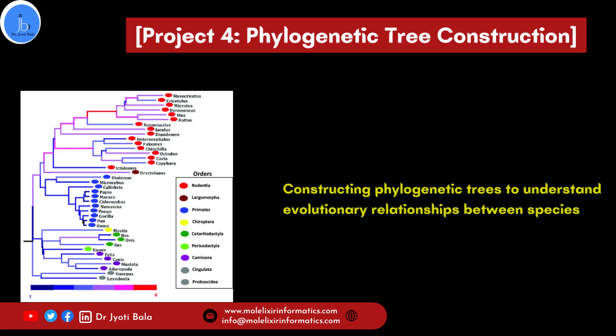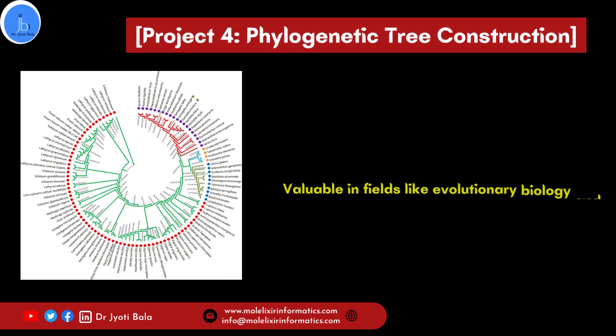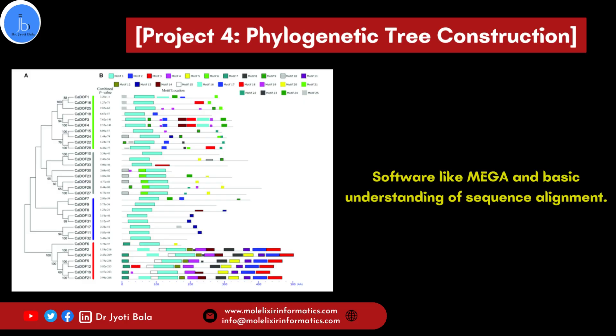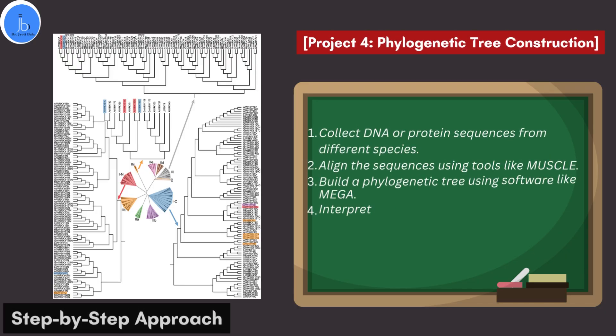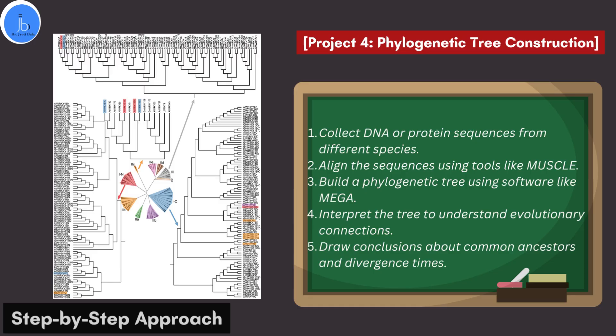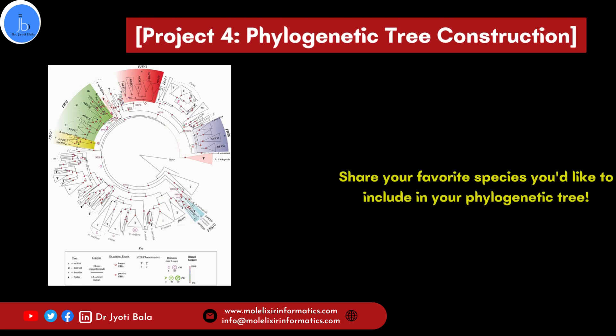The fourth project could be on phylogenetic tree construction. Constructing a phylogenetic tree helps understand evolutionary relationships between species. This project is valuable in fields like evolutionary biology and epidemiology. You will need software like MEGA and a basic understanding of sequence alignment. Collect DNA or protein sequences from different species, align the sequences using tools like MUSCLE, then build the phylogenetic tree using MEGA. Interpret the tree to understand evolutionary connections and draw conclusions about common ancestors and divergence time. Do let us know your favorite species you would like to include.